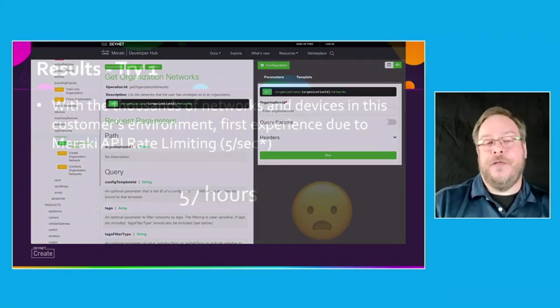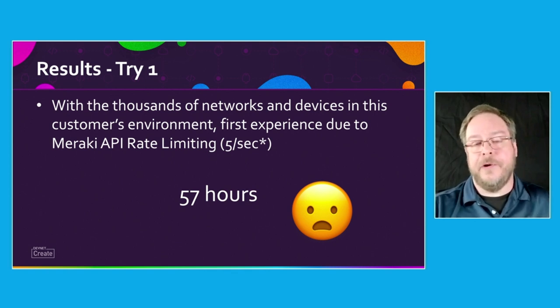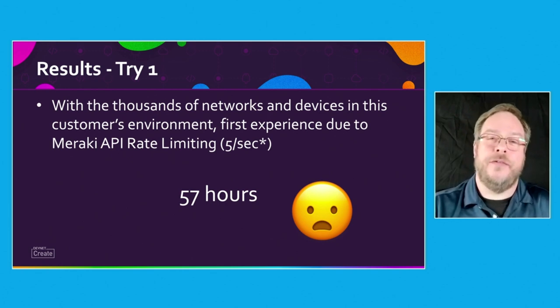In our first iteration, we had thousands of networks and devices in this customer's environment. Our first-pass experience was that it took 57 hours to get through all that information. Why? Because Meraki was doing API rate limiting to five calls per second. Good news — in the last month this summer, Meraki has enhanced that limit to 10. So you could potentially cut your work in half if you're using older scripts that were dealing with the five API limit.